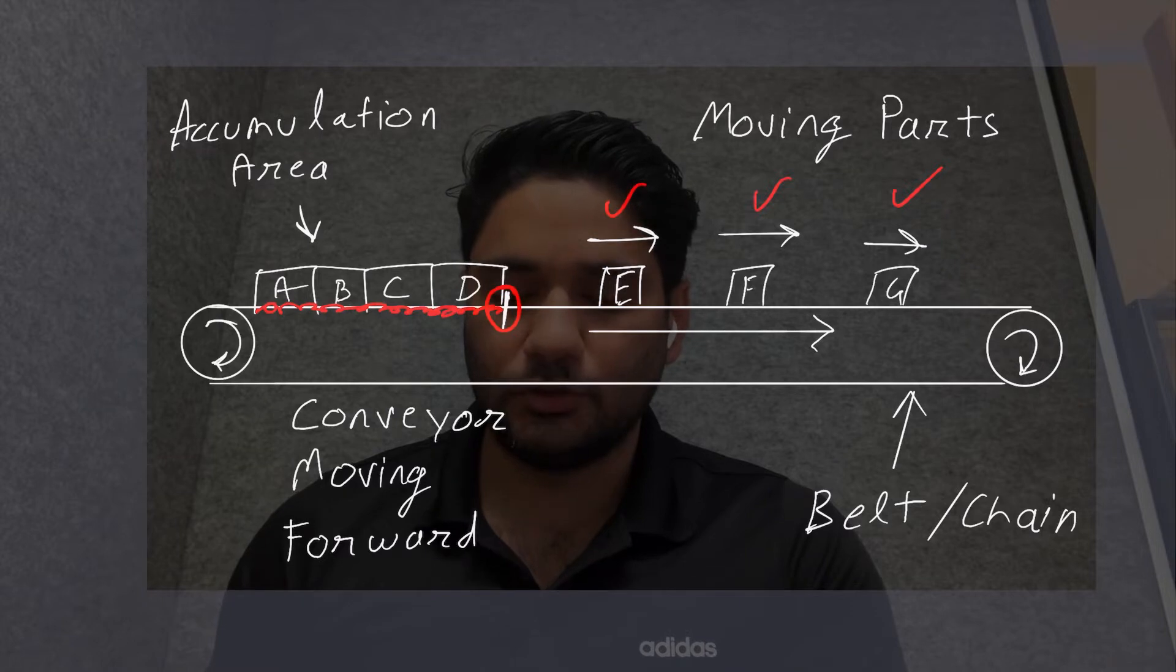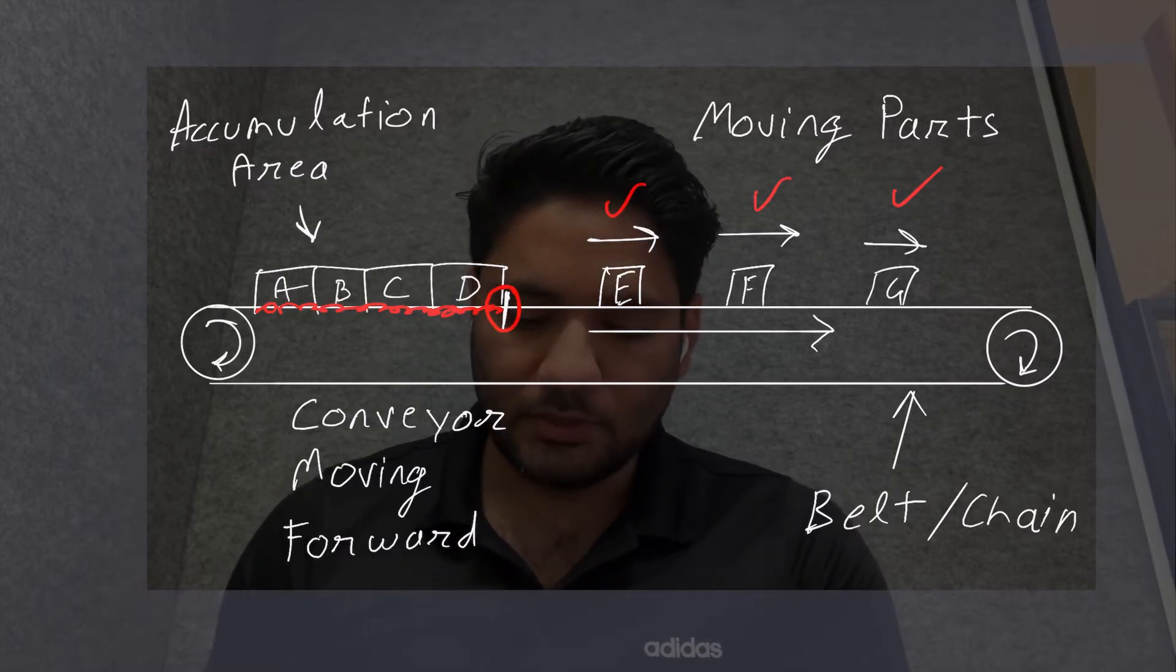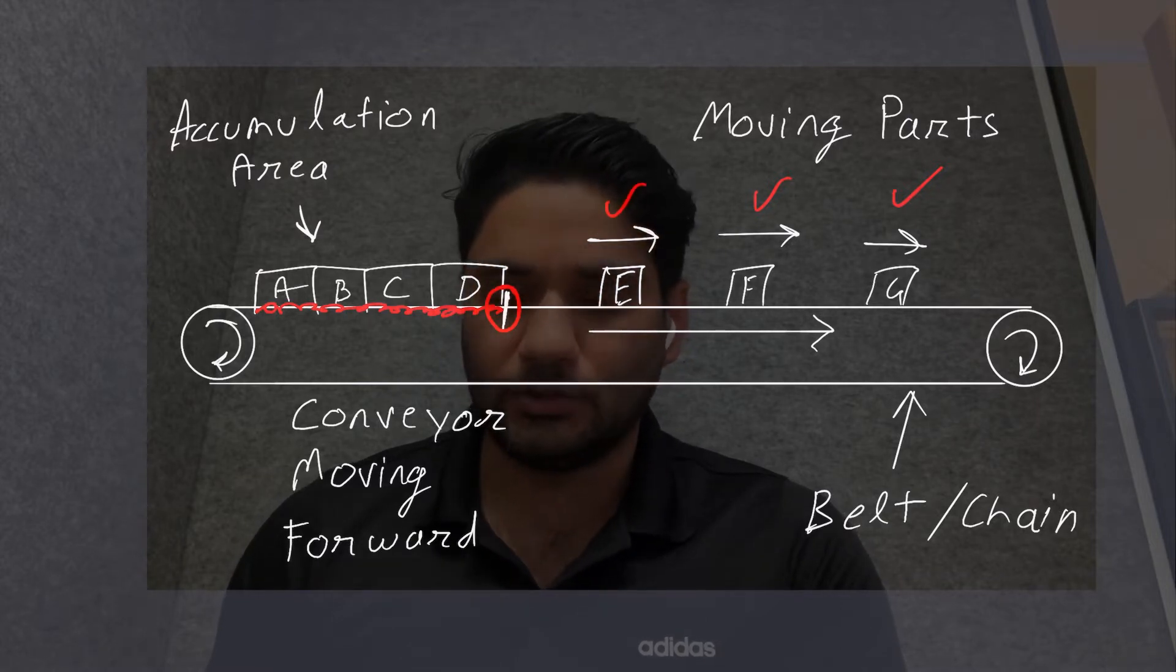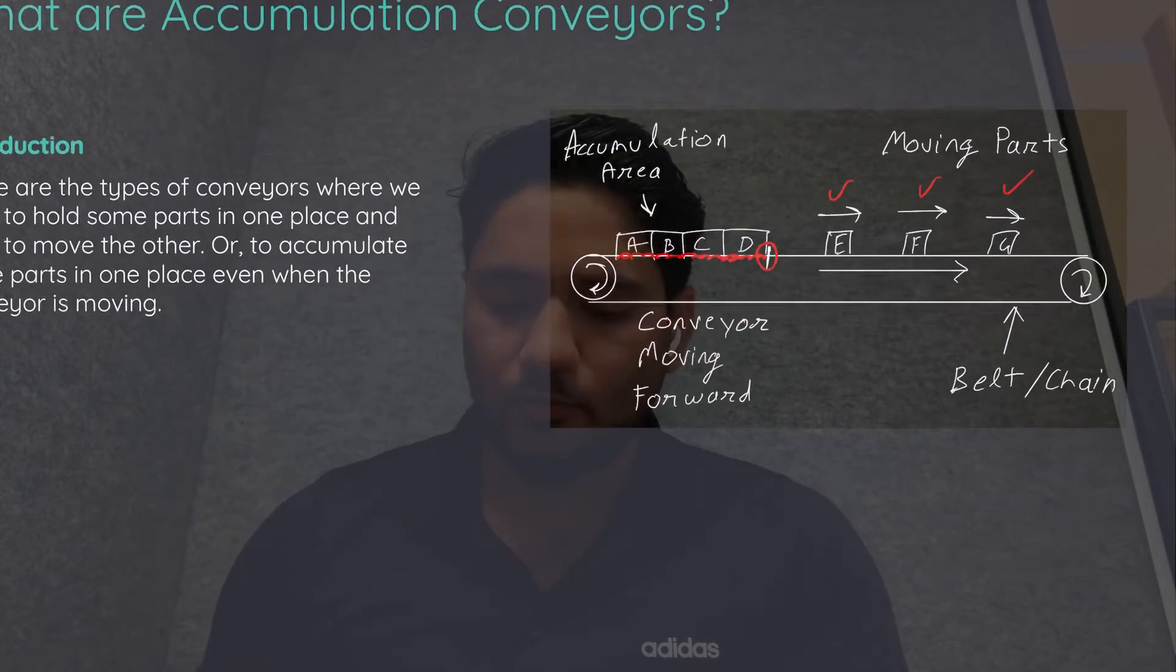So there are special types of conveyors which are being used in such situations. Those are called accumulation conveyors. I'll reiterate: A, B, C, D are stopped by the help of the stopper, and E, F, G continue to move in the forward direction.